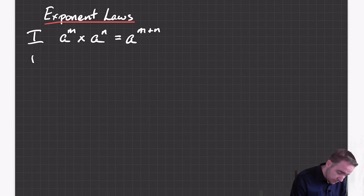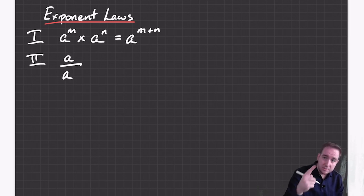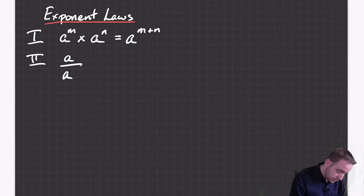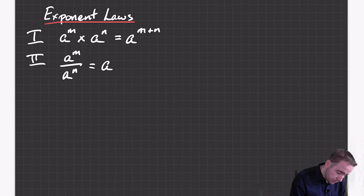The second one is the same sort of thing but it works for division — two of the same base dividing each other, with different numbers on the top and on the bottom, and that gives you those two numbers subtracted.